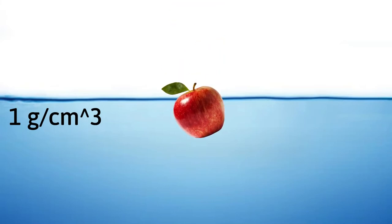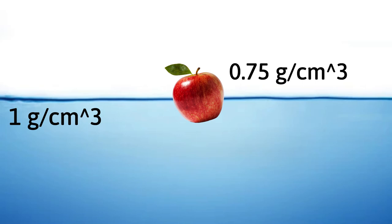Apple has a density of 0.75 gram per cubic centimeter, and iron nail has a density of 7.8 gram per cubic centimeter. Good to know, right?